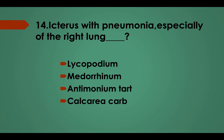Question No. 14: Icterus with pneumonia, especially of the right lung — Option A, Lycopodium; Option B, Medorrhinum; Option C, Antimonium tartaricum; Option D, Calcarea carb. Answer: Option C, Antimonium tartaricum.